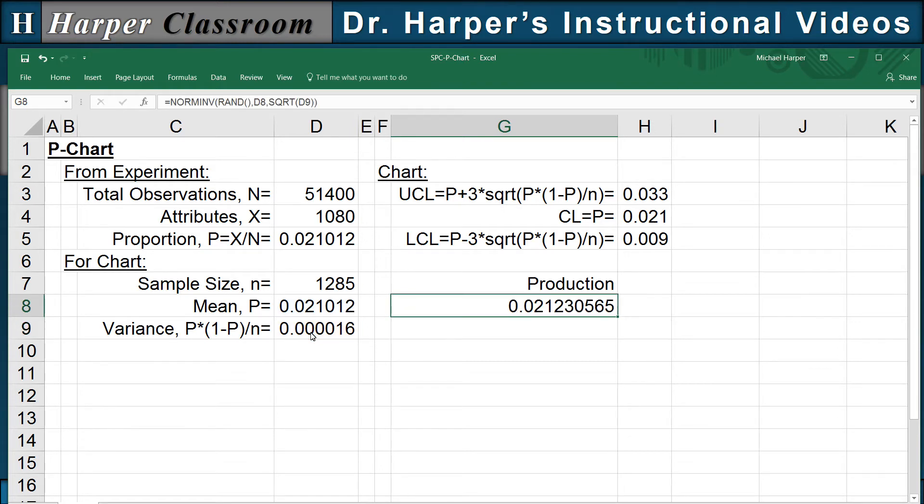And there's our random number. Now we want to keep the mean the same, so we highlight D8 up here, F4 to freeze it, and highlight D9, F4 to freeze it, and return. And so we know when we copy this down, that's just going to be random numbers from the normal distribution.